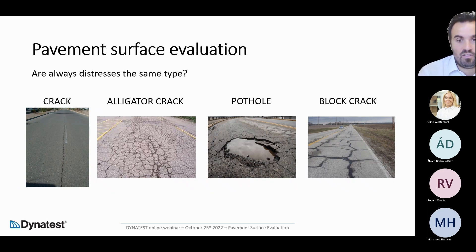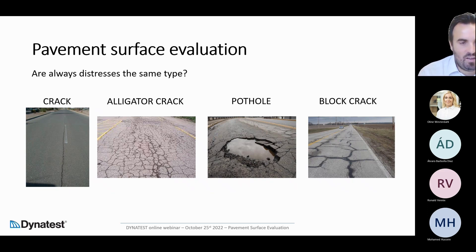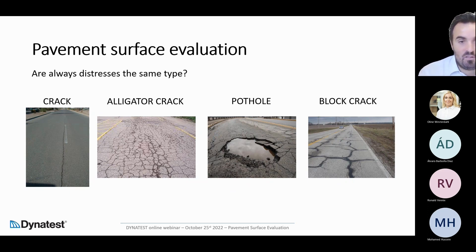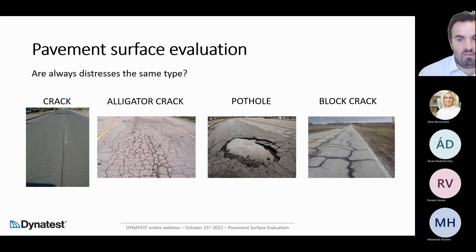Not all distresses are the same type. Here you can see four different kinds of crack-related distresses. On the left is a longitudinal crack — isolated, just one crack in the middle of the road. The second is what we call alligator crack — a cluster of cracks together, associated to different pavement phenomena. Then we have a pothole — an area with a missing part of pavement layers associated with alligator cracking. And then there is a block crack, another kind of distress associated to a different pavement degradation phenomenon.